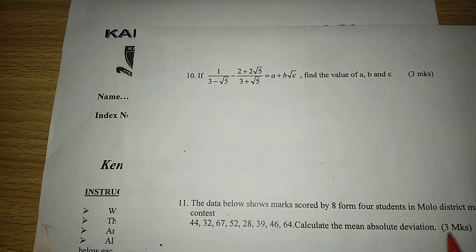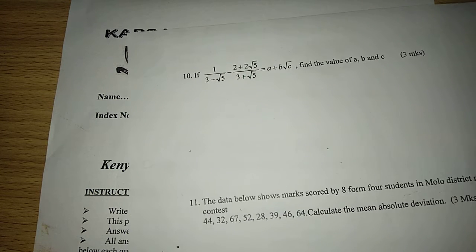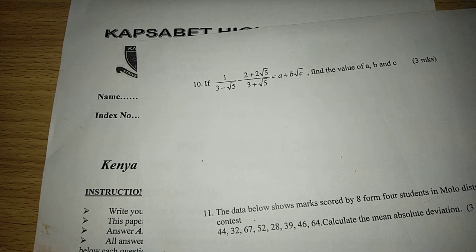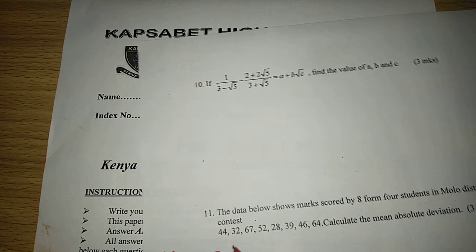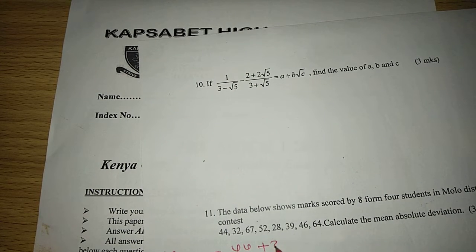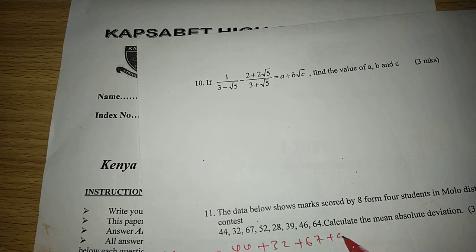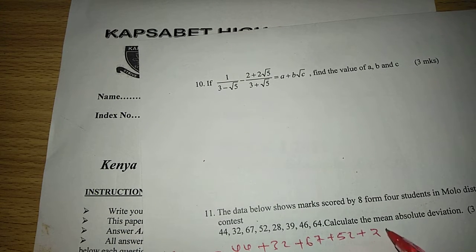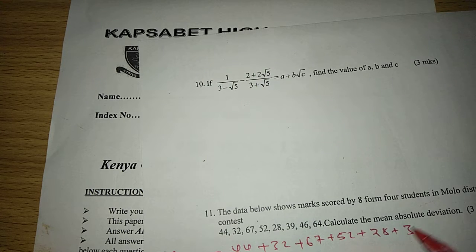We are to calculate the mean absolute deviation. So to calculate the mean absolute deviation, we first of all get the mean of these marks. To get the mean, we add all the marks and we divide with the number of students.